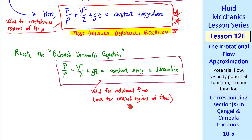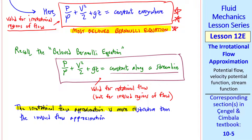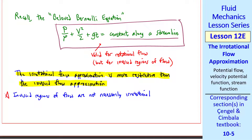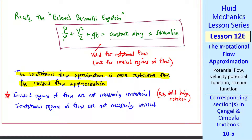As we saw with solid body rotation — a rotational but inviscid flow — the Bernoulli constant changed between streamlines. If we have an irrotational region of flow, the Bernoulli constant is constant everywhere. The irrotational flow approximation is more restrictive than the inviscid flow approximation, and thus the Bernoulli equation is simpler. Note that inviscid regions are not necessarily irrotational, and irrotational regions are not necessarily inviscid — although the viscous terms cancel each other out when the flow is irrotational, even though the individual viscous terms themselves are not necessarily zero.